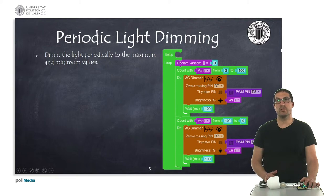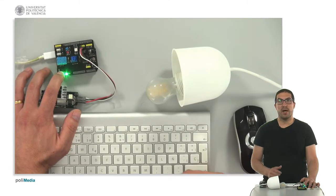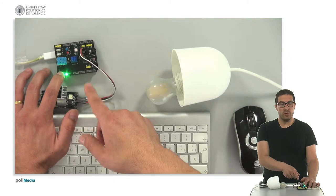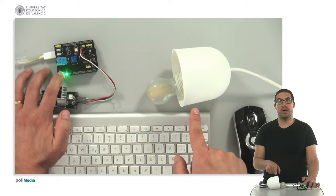Let's switch to the overhead camera to see what we have. I have already uploaded the code onto the board. We have here the AC dimmer and we have the lamp.